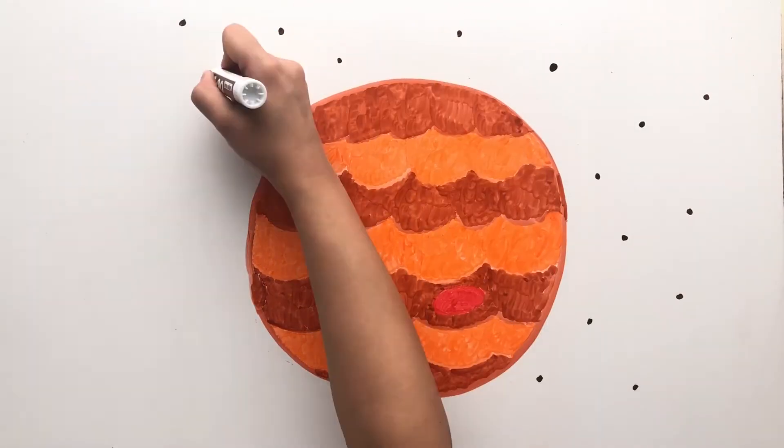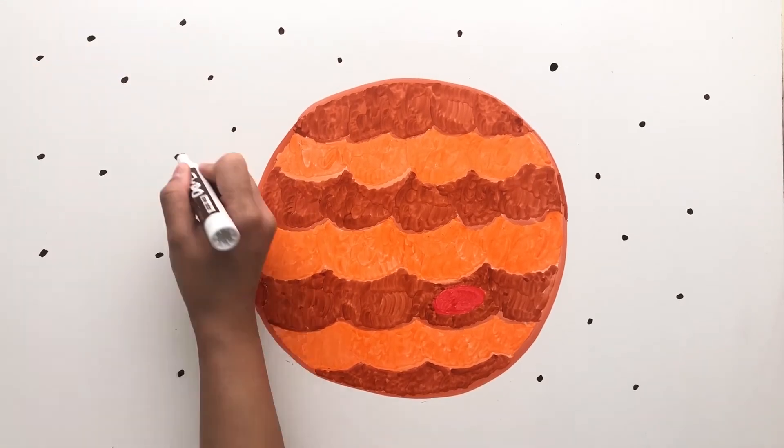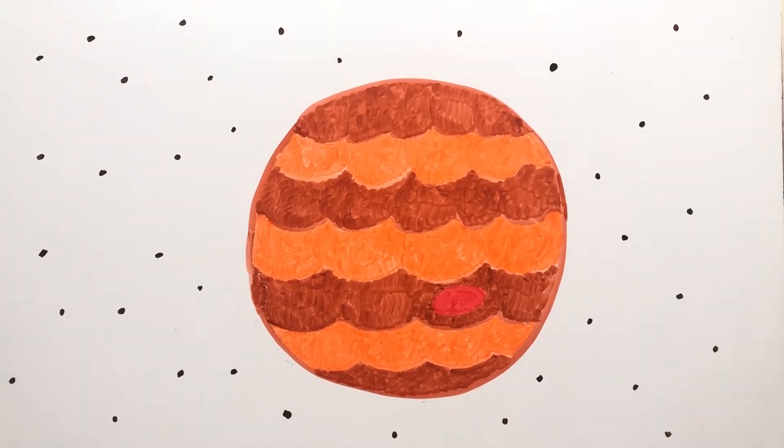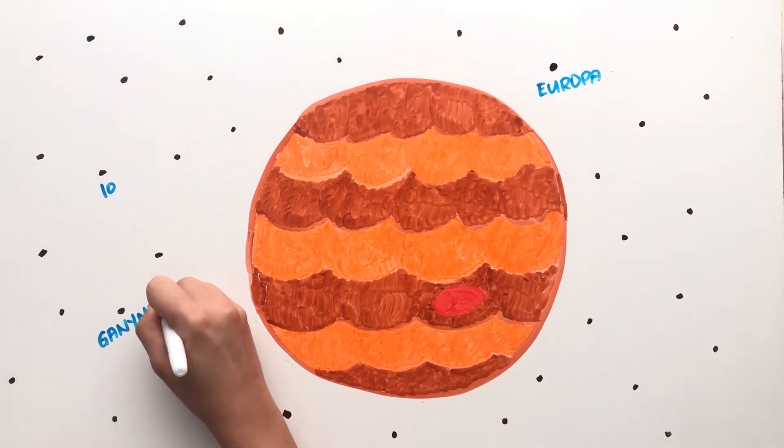It also has the most moons of any other planet in the solar system. Currently, Jupiter has 67 known moons, and the most famous are the Galilean moons first seen by Galileo Galilei in 1610: Io, Europa, Ganymede, and Callisto.